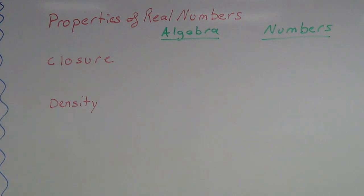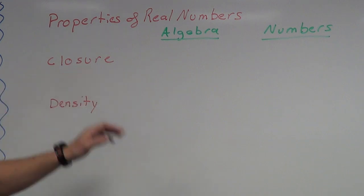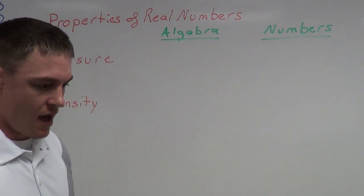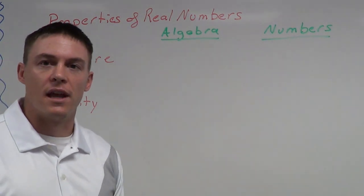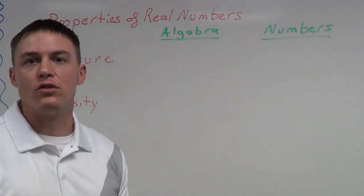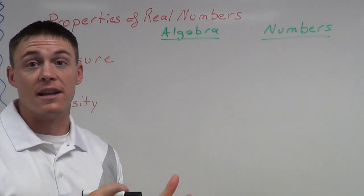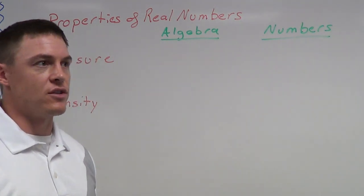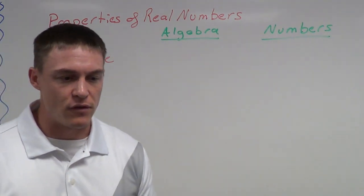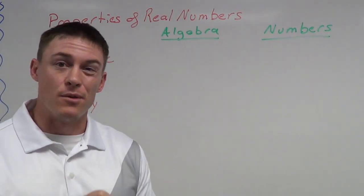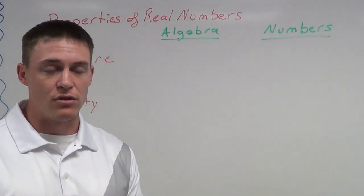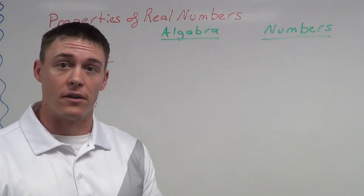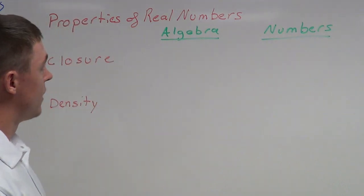The closure property simply states that if you add two real numbers together, you get a real number. And if you multiply two real numbers together, you're also going to get a real number.